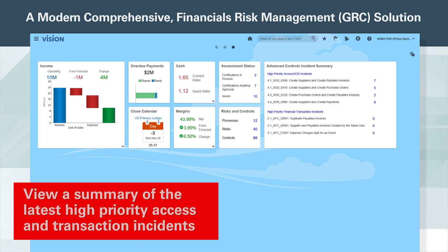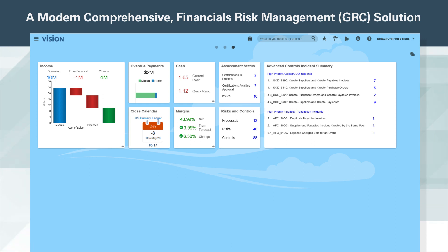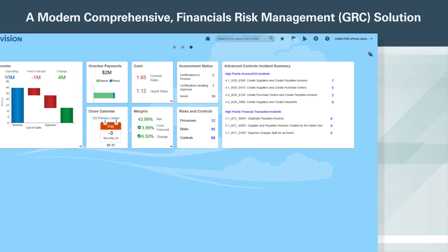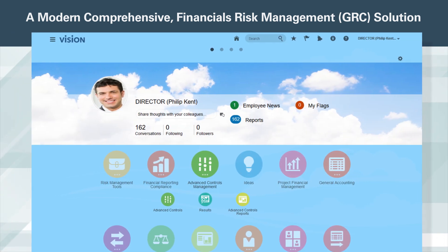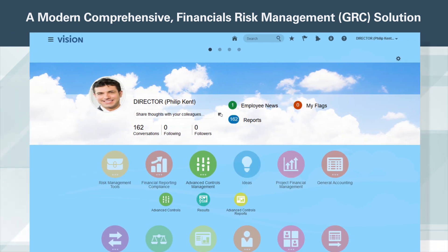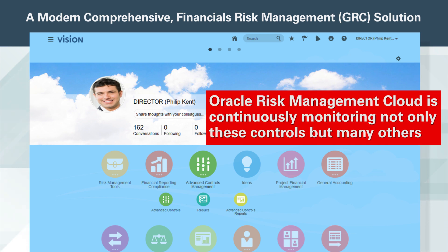Dashboards enable the user to view a summary of the latest high-priority access and transaction incidents that warrant his attention. As these incidents are remediated or new ones are found, the incident counts change to give the user the current status at all times. Oracle Risk Management Cloud is continuously monitoring not only these controls but many others.